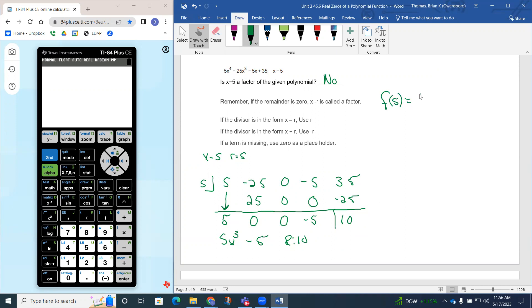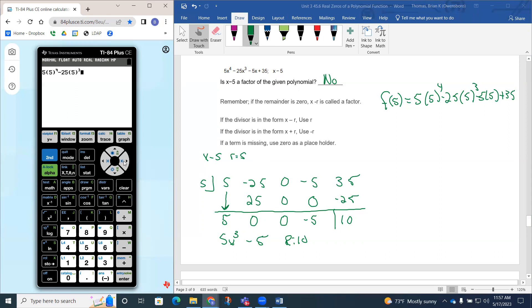I can double check myself by using f(5). I can use the remainder theorem as well. That'd be 5 times 5⁴ - 25 times 5³ - 5 times 5 + 35. So if we do that math, that would tell us the remainder as well. So 5(5⁴) - 25(5³) - 5(5) + 35.